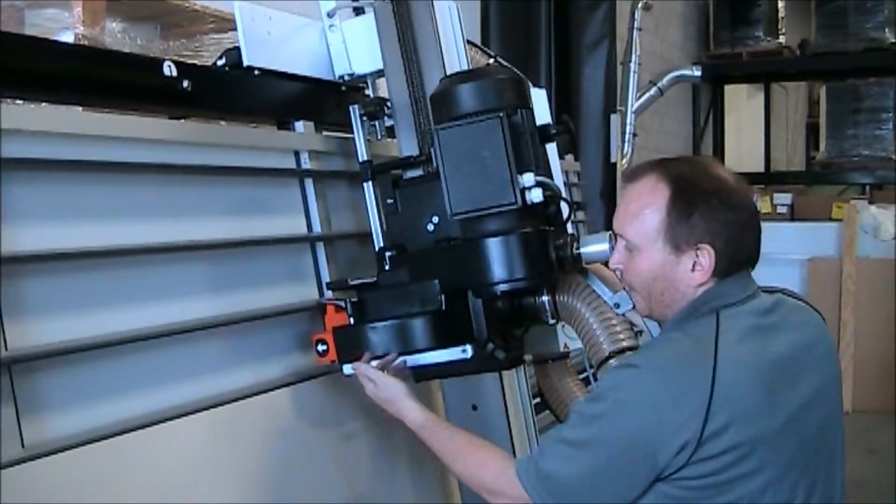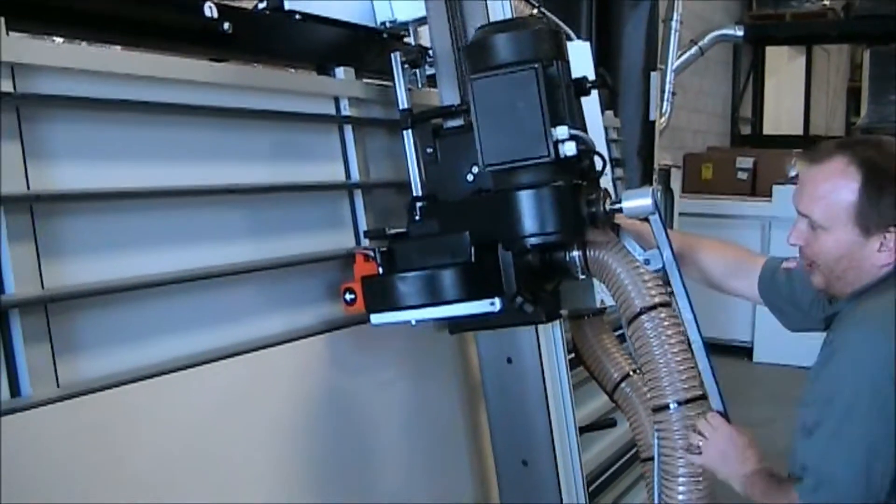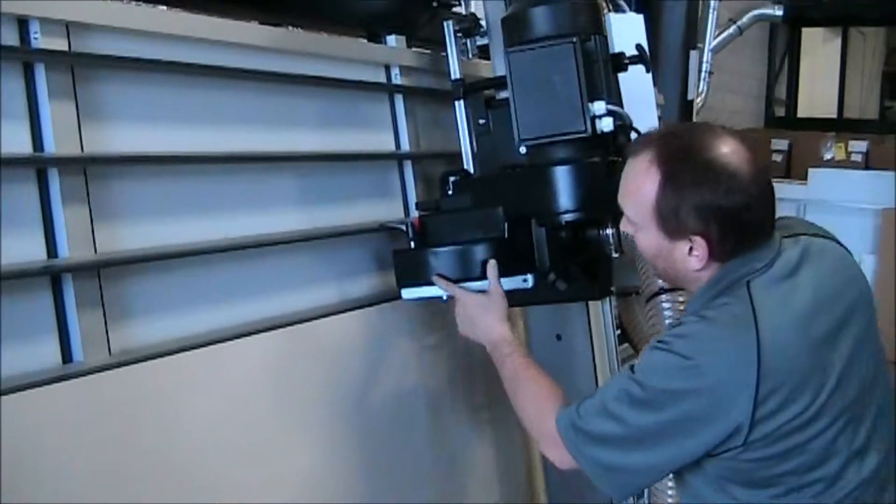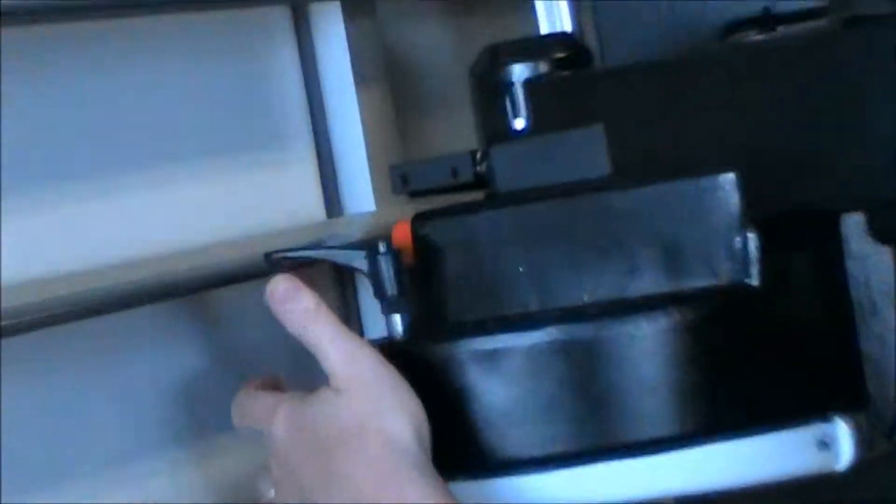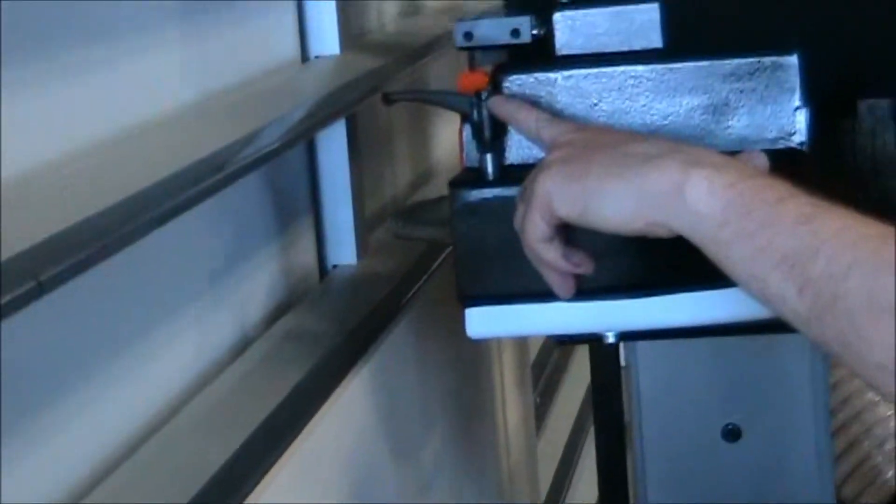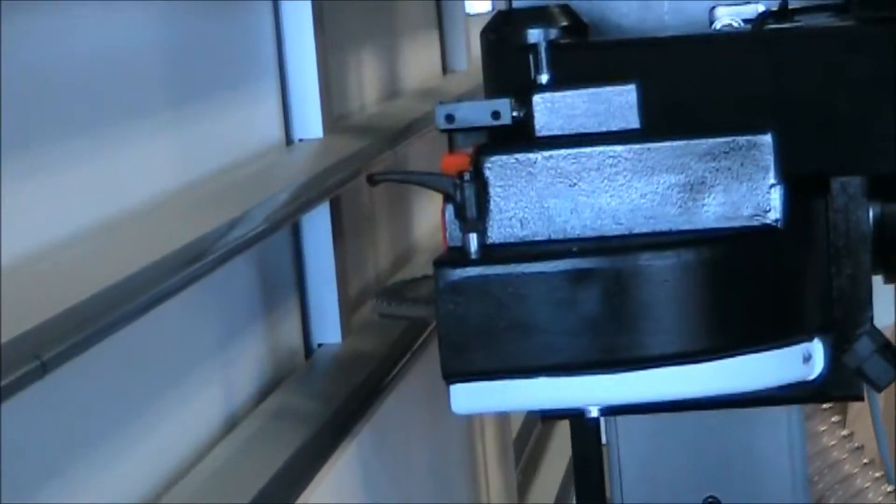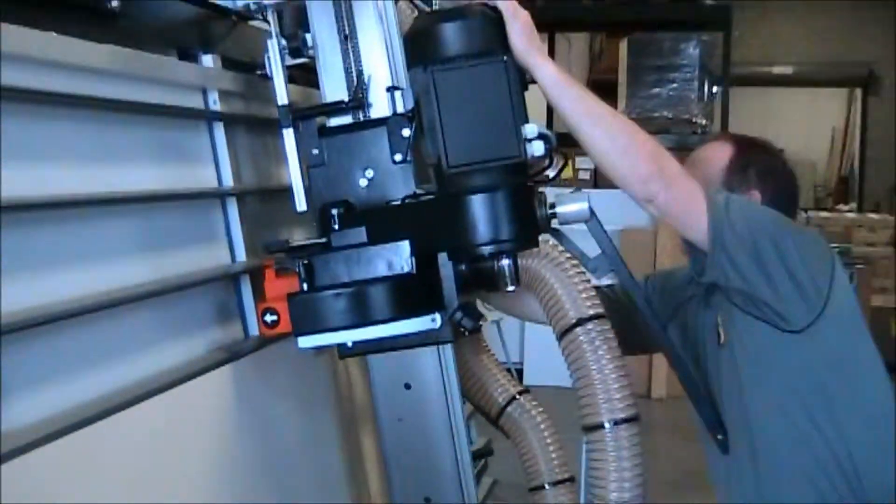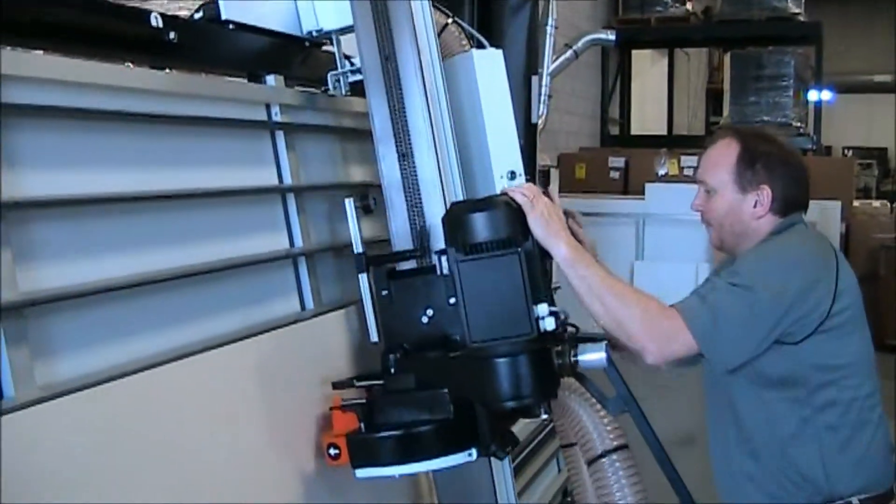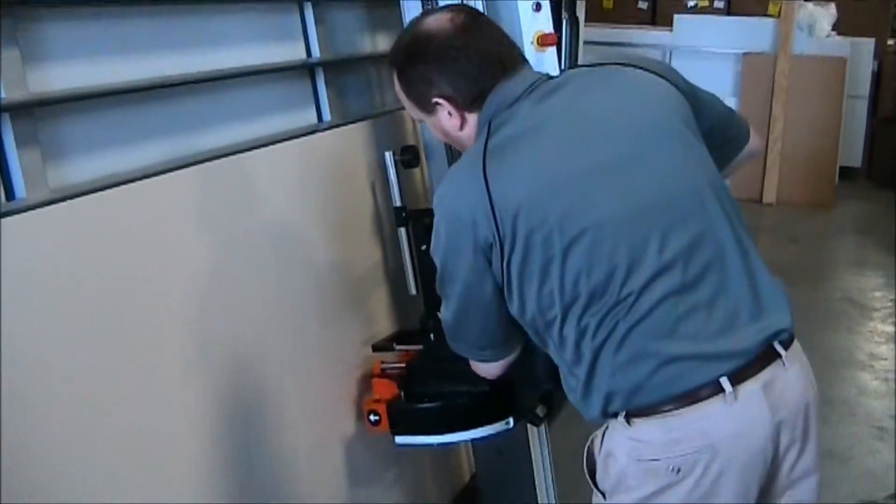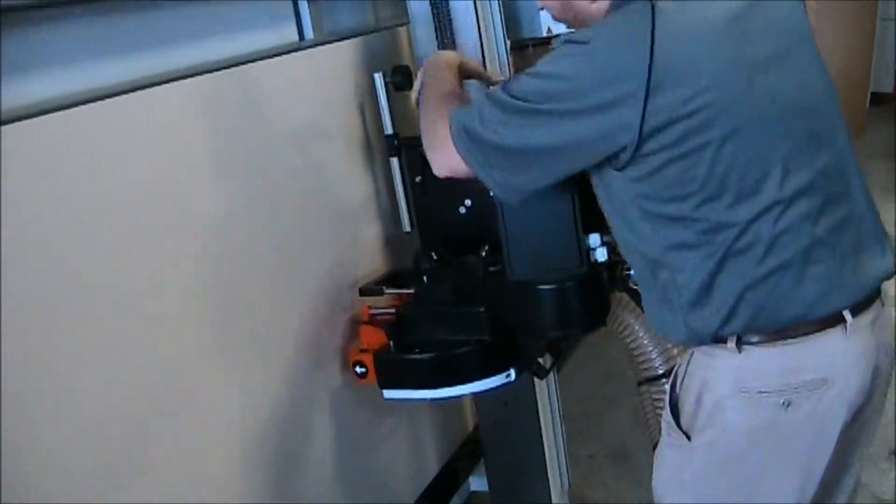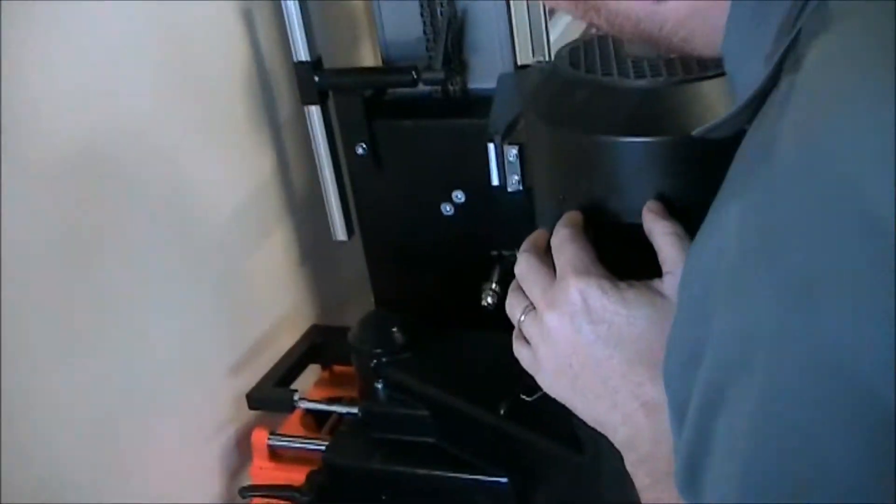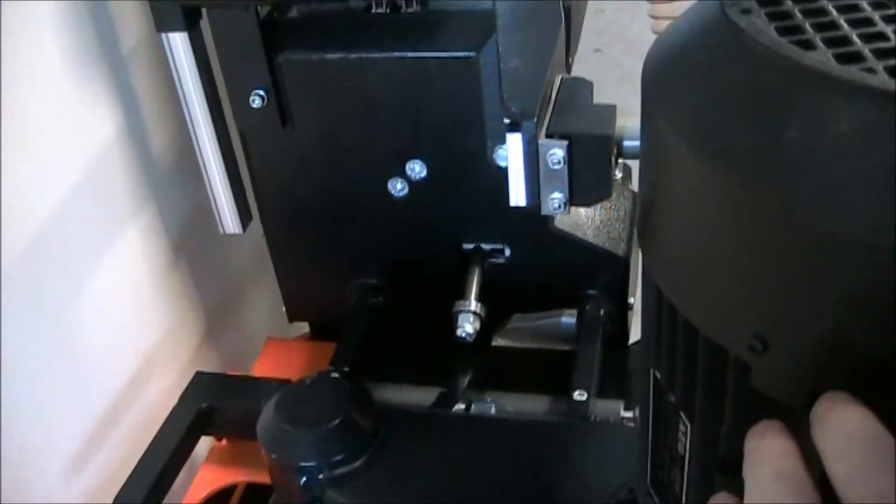And then this knob here is actually for a riving knife on the back side. Again, when I'm plunged in, you'll see there's a riving knife there. You can actually adjust your riving knife via this small knob here. These are all mechanical things—everything else you've kind of seen how it works in there.